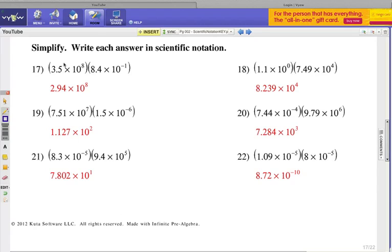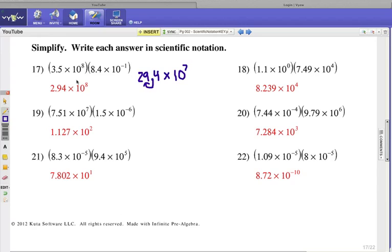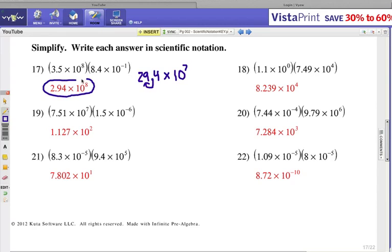Number 17. When I multiply 3.5 by 8.4, that's going to give me 29.4. And then I have 10 to the 8th times 10 to the minus 1. We add those powers together, that'll be 10 to the 7th. But 29.4 is too big. We're going to have to move that decimal point over 1, and that's going to be increasing our power there. So that's why it's 10 to the 8th.